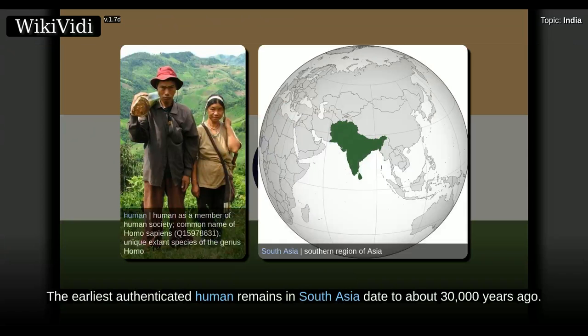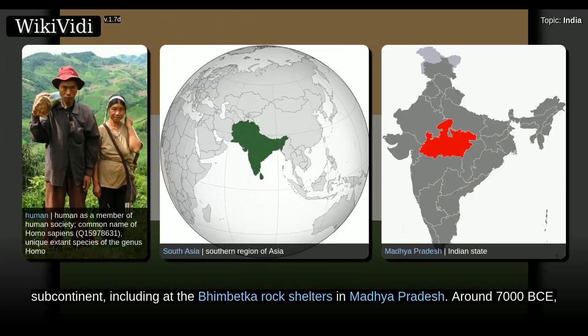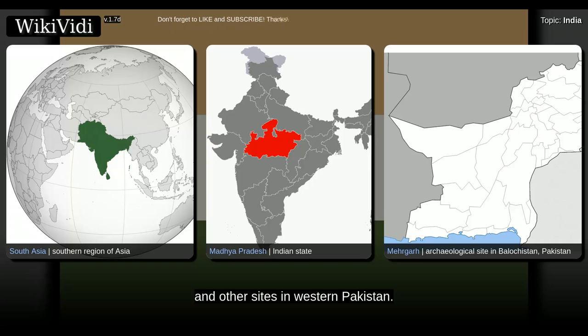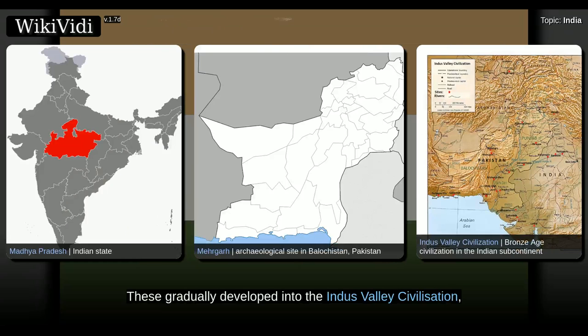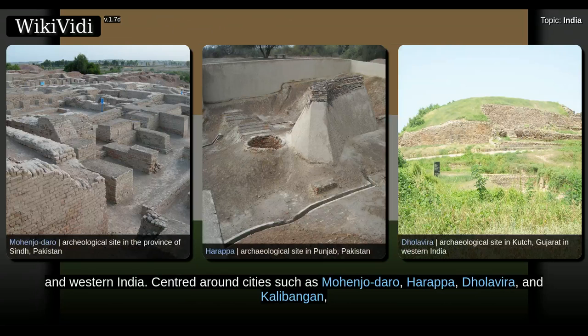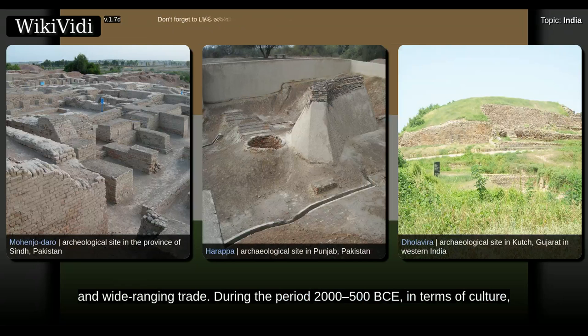The earliest authenticated human remains in South Asia date to about 30,000 years ago. Nearly contemporaneous Mesolithic rock art sites have been found in many parts of the Indian subcontinent, including at the Bhimbetka rock shelters in Madhya Pradesh. Around 7,000 BCE, the first known Neolithic settlements appeared on the subcontinent in Mehrgarh and other sites in western Pakistan. These gradually developed into the Indus Valley civilization, the first urban culture in South Asia, which flourished during 2500–1900 BCE in Pakistan and western India. Centered around cities such as Mohenjo-daro, Harappa, Dholavira, and Kalibangan, the civilization engaged robustly in crafts production and wide-ranging trade.